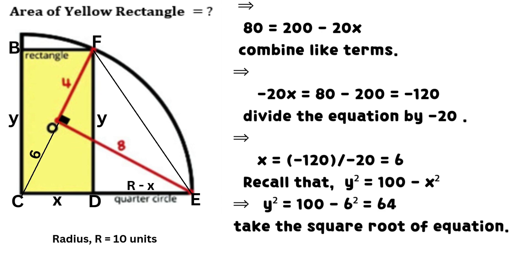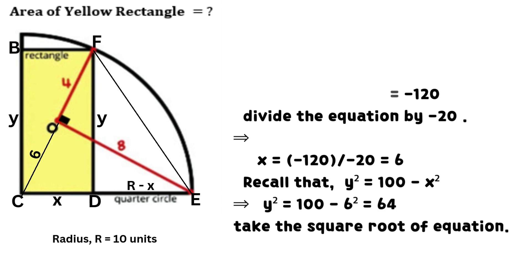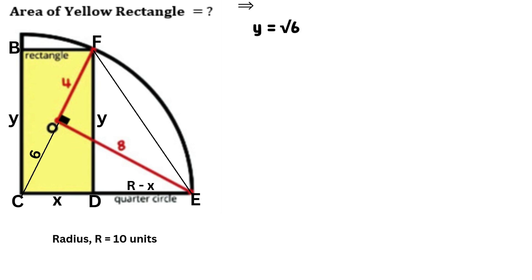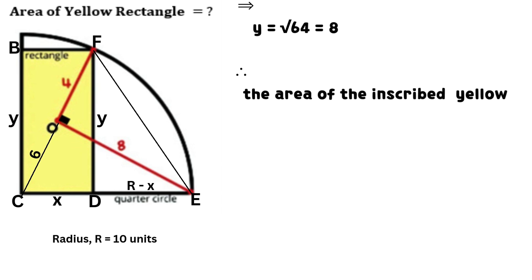Recall that the square of Y equals 100 minus the square of X. It implies that the square of Y equals 64, after simplification of substituted values. Take the square root: Y equals the square root of 64, which equals 8. Therefore, the area of the inscribed yellow rectangle equals the product of X and Y, which equals 48 square units.